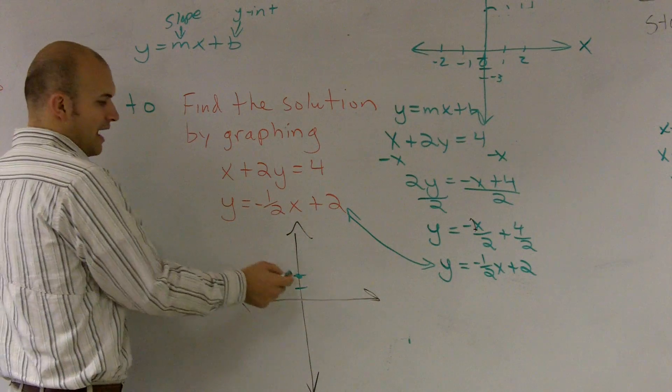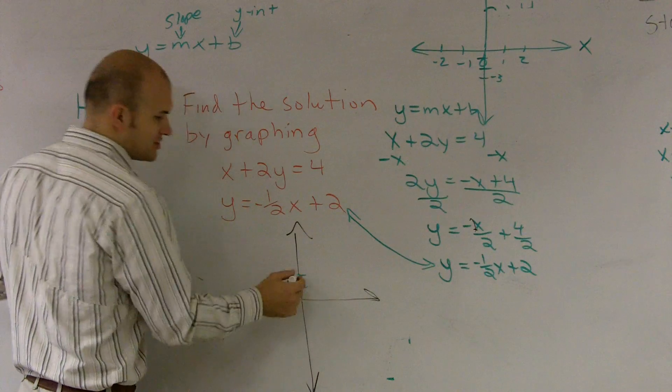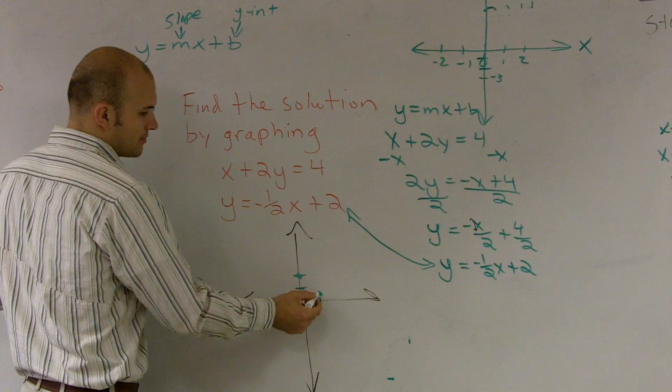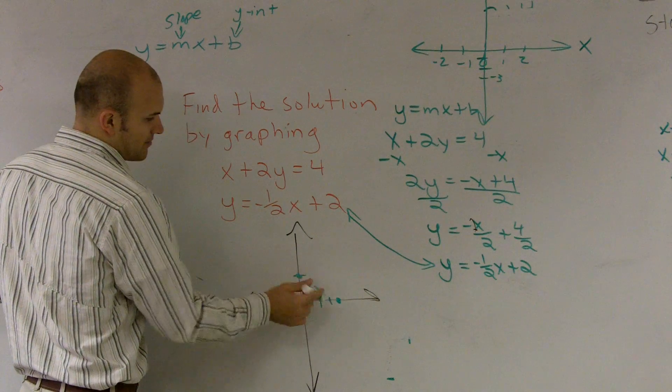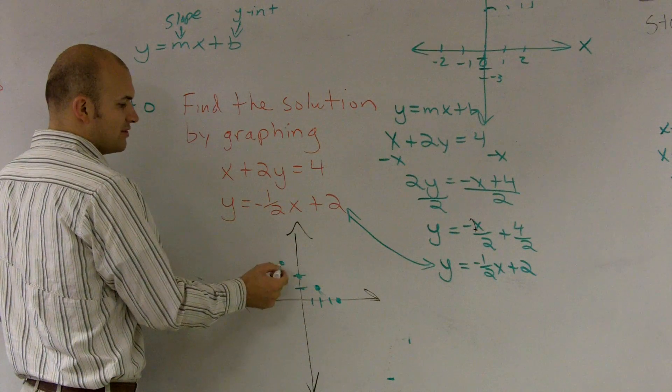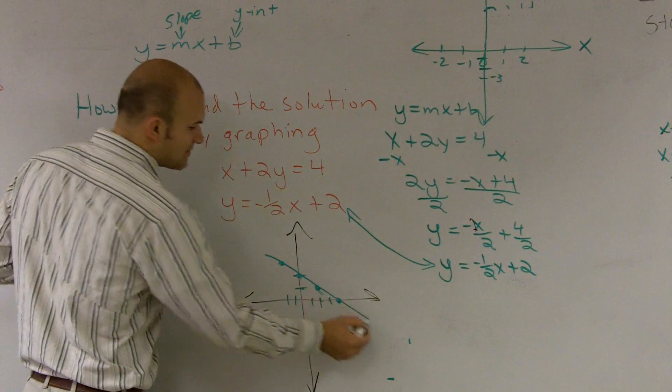And since it's negative, I'm going to make sure I'm going to be going in this down direction. So I'm going to go down 1 to the right 2. Down 1 to the right 2. Or you can also go up and to the left, because going to the left is also going to be negative. So I'm just going to connect my line.